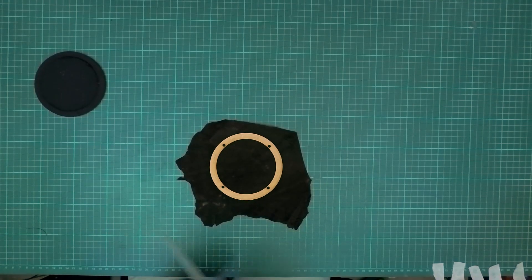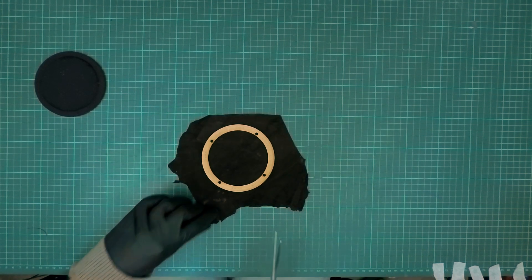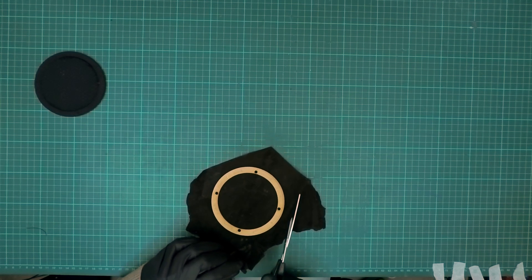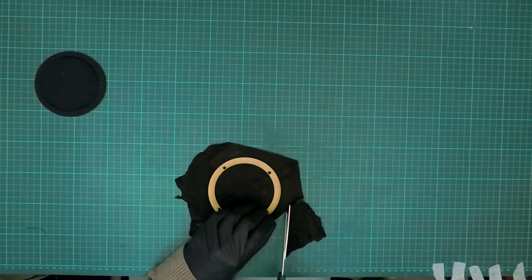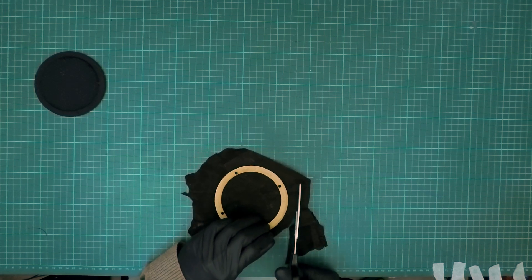Once the front ring is glued to the leather, you want to trim around the excess leather approximately an inch from the edge of the front ring. This will be used to wrap around the edge of the front ring and onto the back.